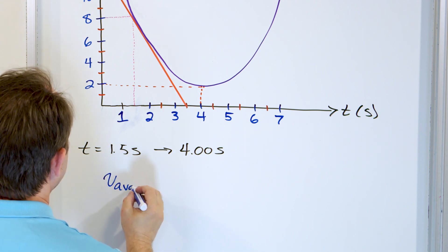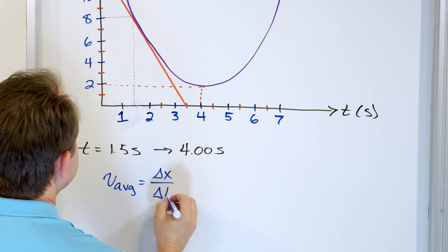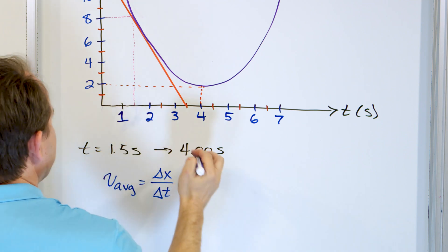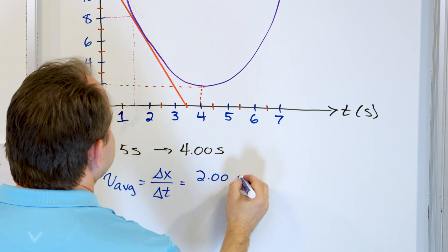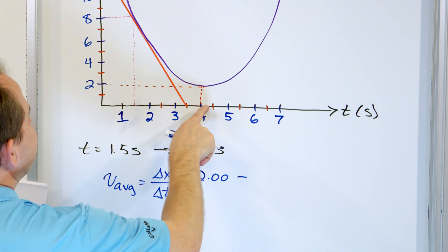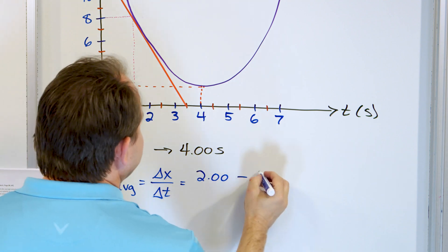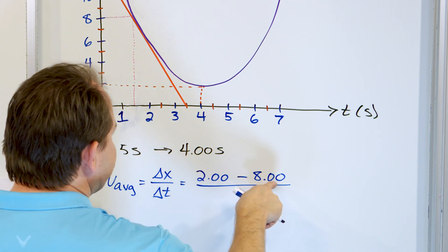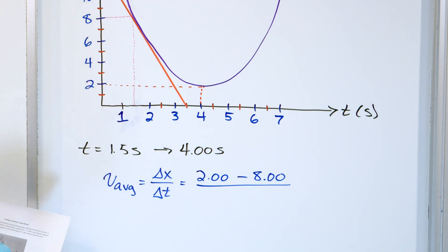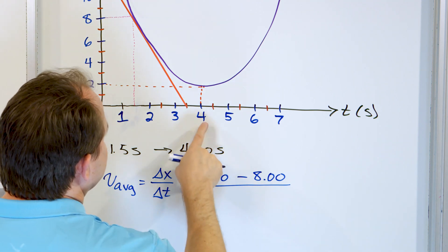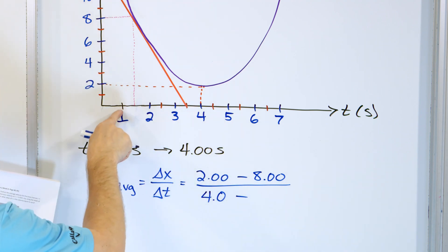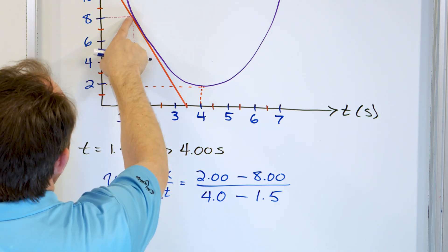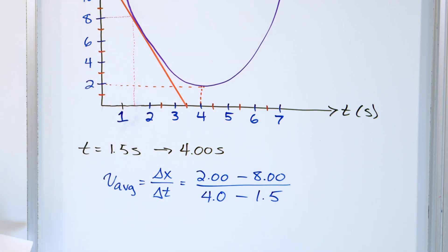The average velocity equals delta x over delta t — final minus initial. At 4 seconds, the final position is 2.00 meters from the origin, and we subtract the initial position at 1.5 seconds, which is 8.00 meters away. Then t2 minus t1: t2 is 4 seconds, t1 is 1.5 seconds. We're finding the average velocity between these two points on the time-space graph.